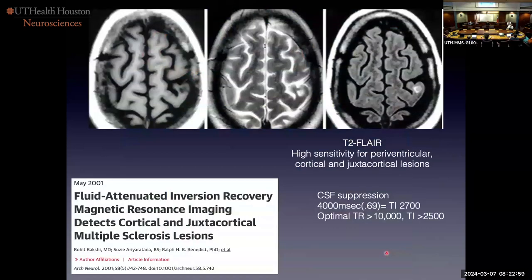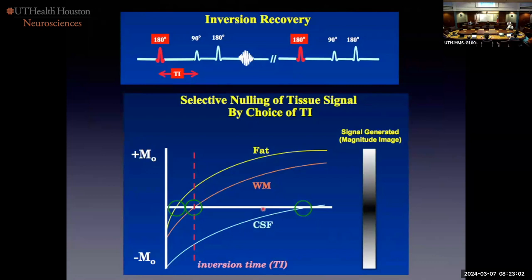Let's look at inversion recovery — something people don't know. Did you know that a T2 FLAIR image is a T1-weighted image, that it has T1 weighting in it? With inversion recovery, it's a spin echo — there's the 90, 180, and echo — but it starts with a 180. So there's the inversion, starting with complete inversion below the baseline. Here comes CSF with its very slow T1, which means this is T1 weighting.